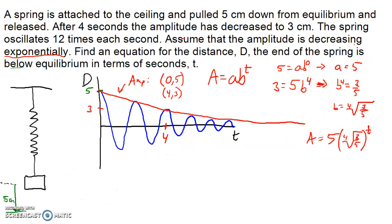So now let's think about the actual oscillation going on here. So we're told that the spring oscillates 12 times each second. So when we think about equations for sinusoidal shapes, we generally think about three things, four things. We think about midline, we think about amplitude, we think about period, which then gives us the b in our equation, and we think about shape.